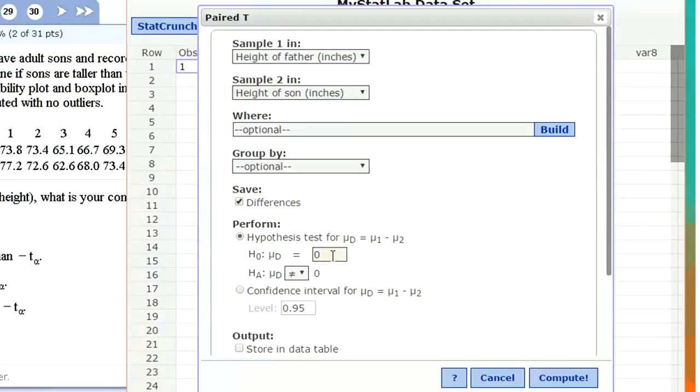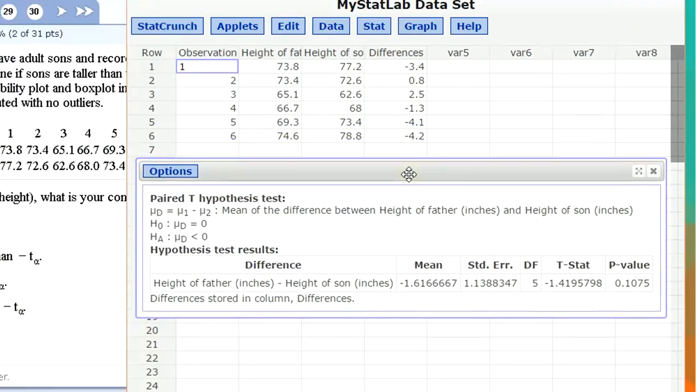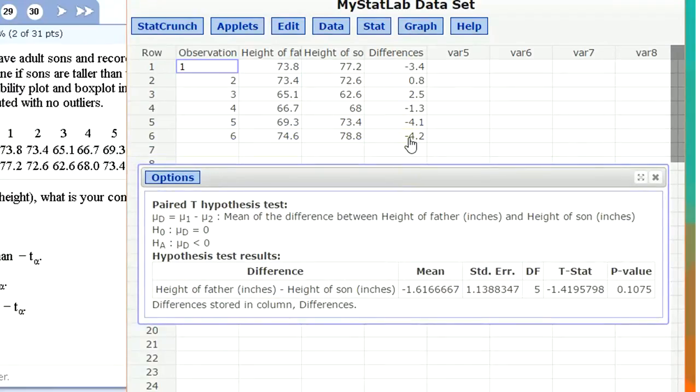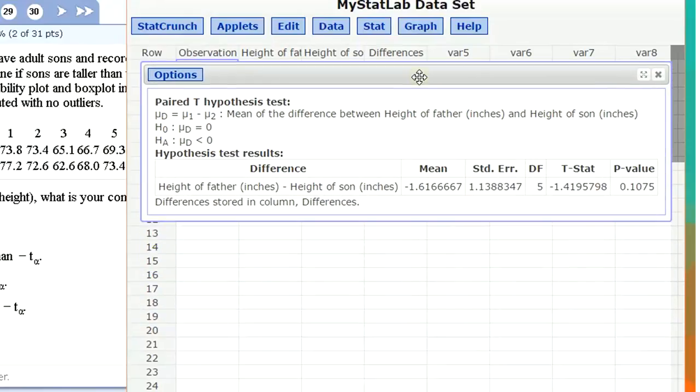Now the null hypothesis is that the difference of means is zero, but the alternative is that we want to see if the sons are taller than their fathers. That means father's height minus son's height should be negative, less than zero. If the son's mean is bigger than father's mean, mu one minus mu two should be negative. So that's the alternative we want to pick. Now I want to click compute. And I want to show you one thing that just popped up. This new column of differences was created. So really what was done was a one sample t-test on the differences column. That's all a paired sample test is. You just calculate the differences and you do a one sample test on the differences. But this allows us to do it all in one fell swoop.